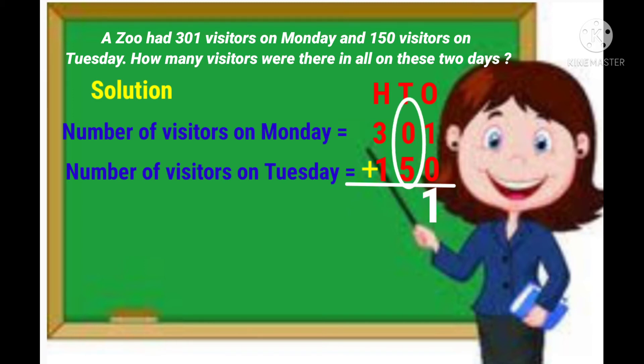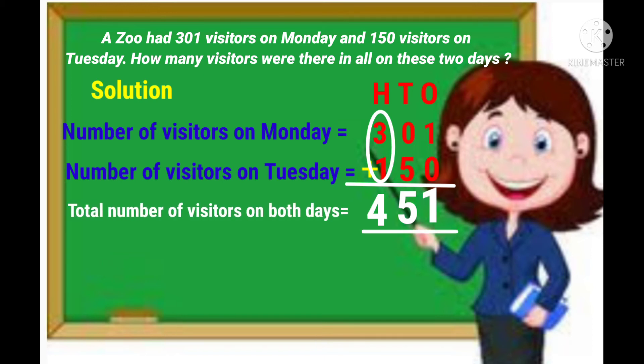Next, add the digits in the tens column. 0 plus 5 is equal to 5. Write 5 in the tens column. Then, add the digits in the hundreds column. 3 plus 1 is equal to 4. Write 4 in the hundreds column.